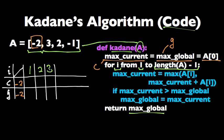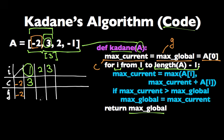Let's look at index 1. What we're asking is: what's the maximum subarray ending at this index? It's either 3, or negative 2, 3 — and the one with the larger sum is 3. So that's the maximum subarray ending at this index, with a sum of 3, and we update max_current. That's also larger than the global sum, so we update max_global as well. In the code, this is expressed as: max_current equals the maximum of A[i] and max_current plus A[i]. And if max_current is larger than max_global, then update max_global.